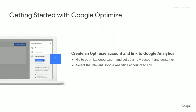The first step is to create an Optimize account. Go to optimize.google.com and set up a new account in a container. There's a handy little menu on the right-hand side that walks you through the steps you need — really only one or two are required. Once you've selected your relevant Google Analytics account to link to, you're done with this first step. You do need a Google Analytics account to get started, so if you don't have one, go to analytics.google.com, create an account, and install that tag on your page.